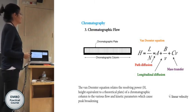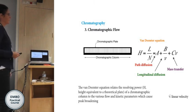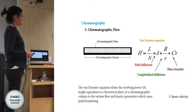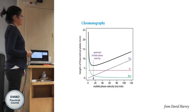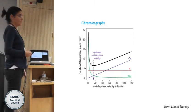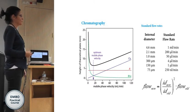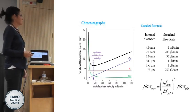The van Deemter equation relates the plate height to these three factors. Since path diffusion is independent of flow, longitudinal diffusion decreases with flow, and mass transfer increases with flow, there is an optimum flow rate that depends on the column diameter. For example, for a 75 micrometer column — which is what we typically use — 250 nanoliters per minute is the ideal flow rate. In practice, you are unlikely to change the flow because this is well established.